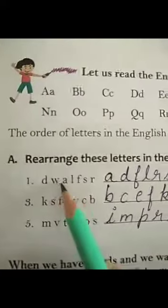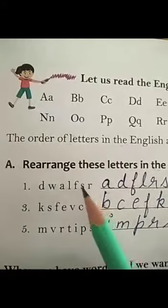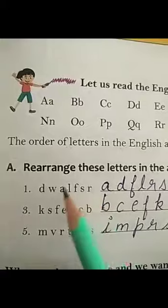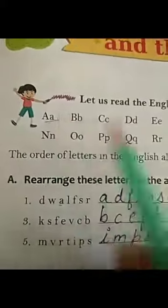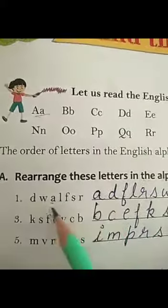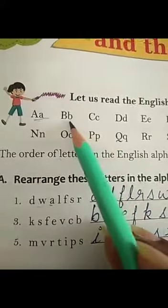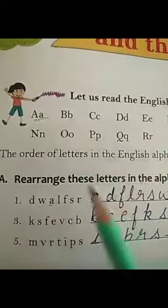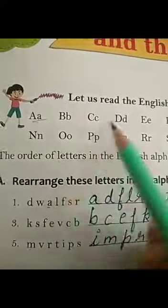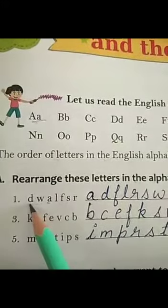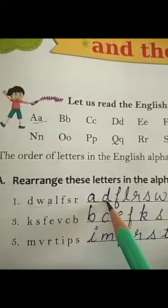First one: D, W, A, L, F, S, R. So in alphabetical order, A comes at first place. So we will write A. Now here in this group, we are not having B, and C is also not here. Now we have D here. So we will write D at second position.